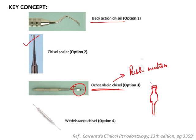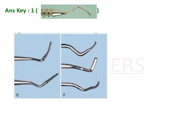So you have two concave surfaces. This is very important because this is a neat question which was asked: How do you identify the Ochsenbein chisel? The Wedelstaedt chisel is used in conservative dentistry and that is not important for us over here.